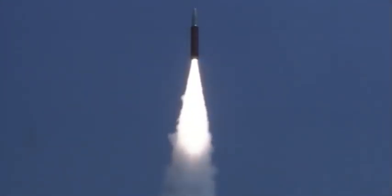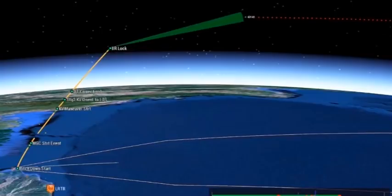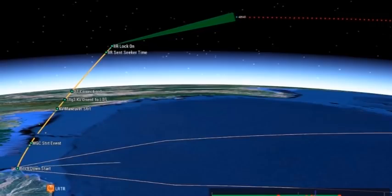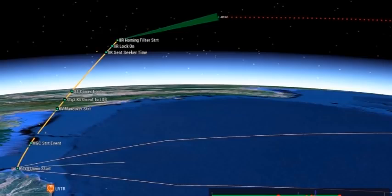The booster stages had taken the missile to the required heights and velocities before the kill vehicle was released. The heat shield was ejected subsequently and the IIR seeker locked onto the target at the expected range.